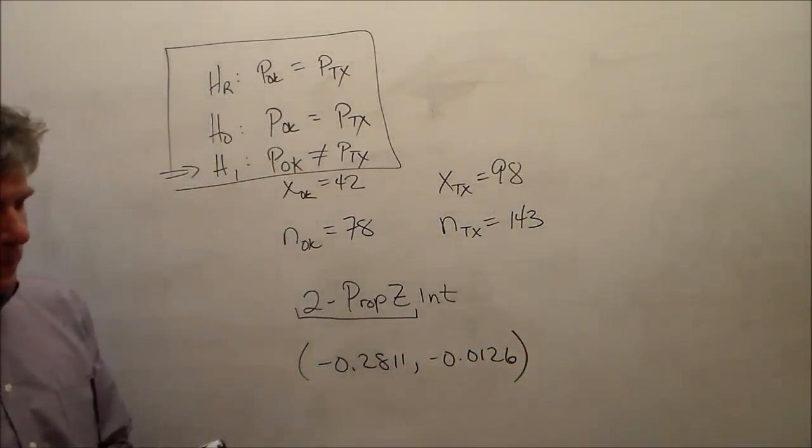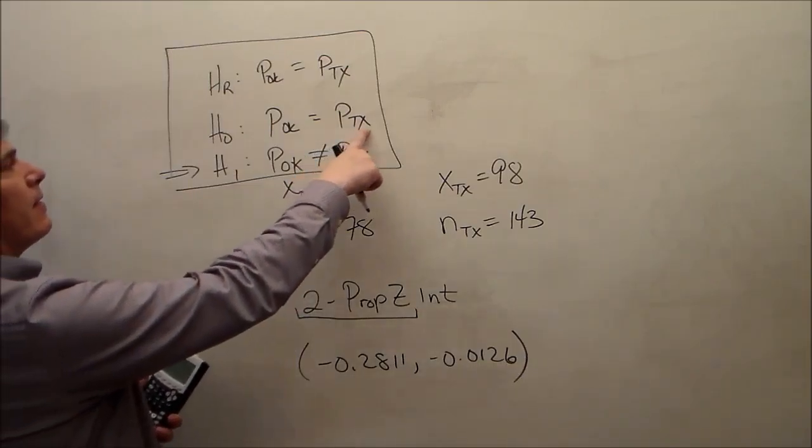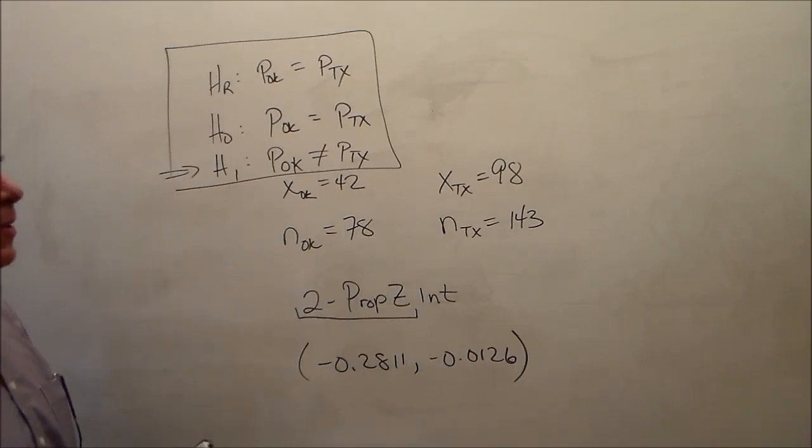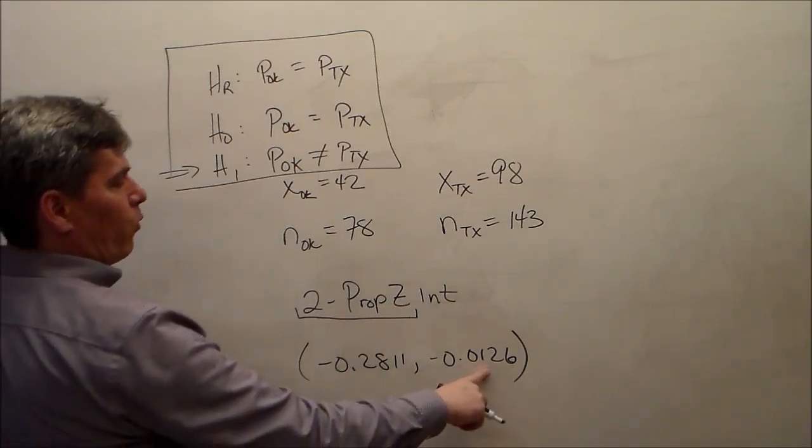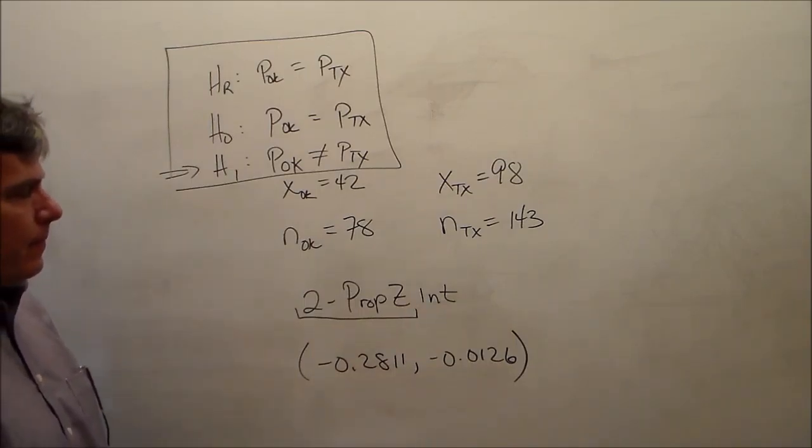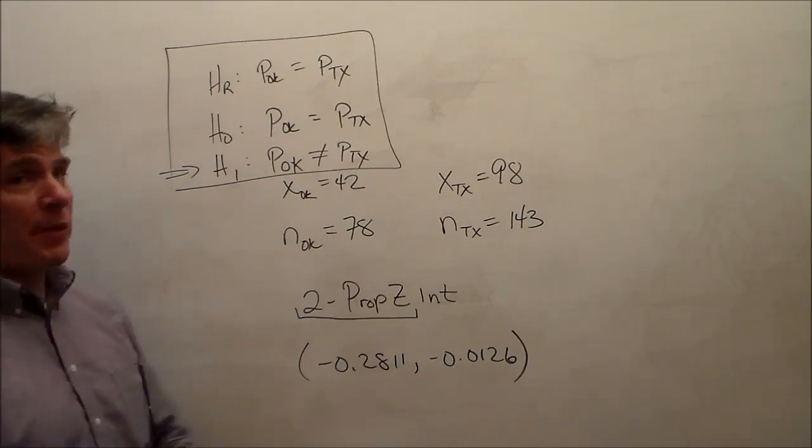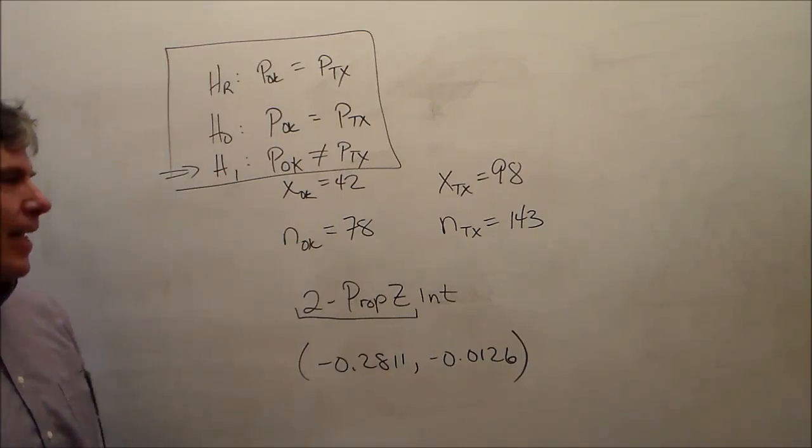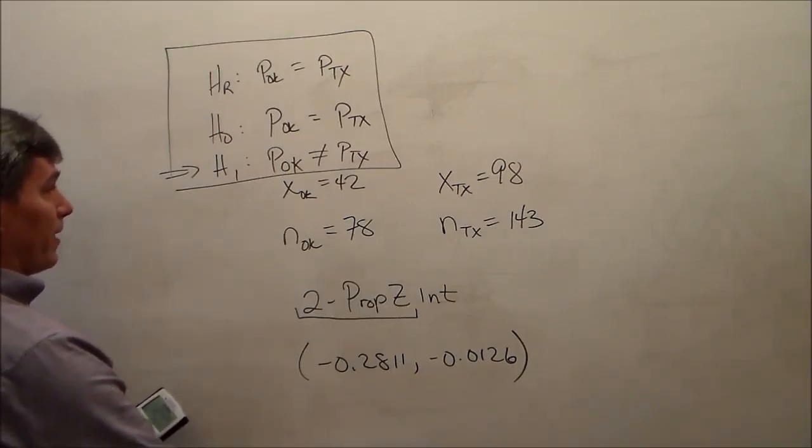And there's our confidence interval. We're 95 percent sure that Texas has a higher zebra mussel infection rate than Oklahoma by between 1.2 percent and 28 percent. Zero is not in this confidence interval. Therefore, we also reject the null hypothesis. Okay, that's it. That's problem one.